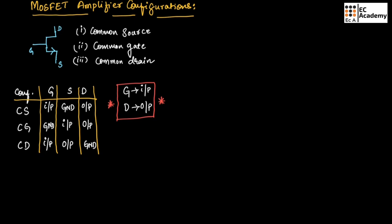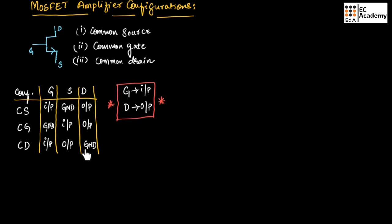This is how we can make different MOSFET amplifier configurations. In common source configuration, gate will be the input side, drain will be the output side, and source is connected to ground. In common gate configuration, gate is connected to ground, source is the input side, and drain is the output side. In common drain configuration, gate is taken as input, source is taken as output, and ground is connected to the drain terminal.